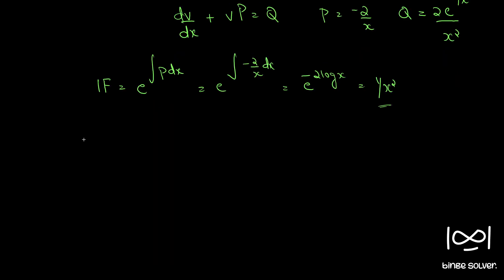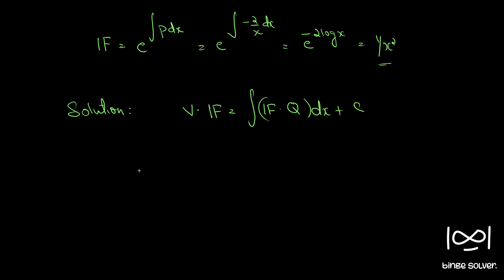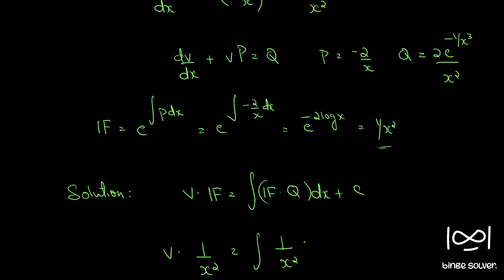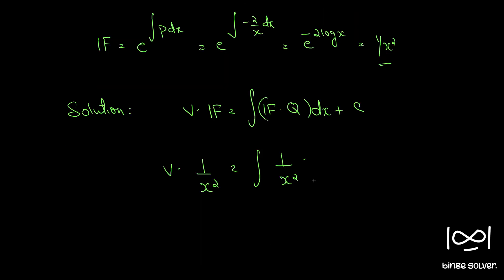The solution for such a linear differential equation is given by v times the integrating factor equals the integral of the integrating factor times Q dx plus c. So we have v times 1 by x squared equal to the integral of 1 by x squared times 2 e raised to minus 1 by x cubed divided by x squared, dx plus c.